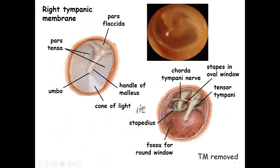The right tympanic membrane shows the pars tensa, pars flaccida, the umbo, the cone of light, and the handle of the malleus. When you remove the tympanic membrane, you can see the internal structure including the bony ossicles, the stapedius muscle, and the tensor tympani muscle.